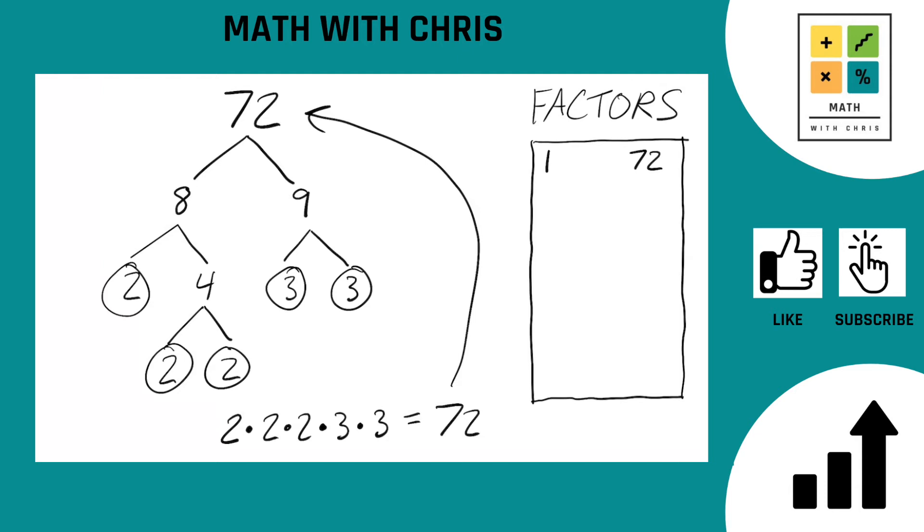So let's bank the prime numbers we've found. We found two and three, those are the only prime numbers that are factors of 72.